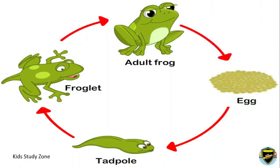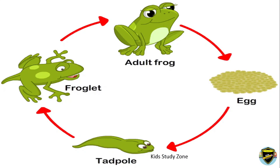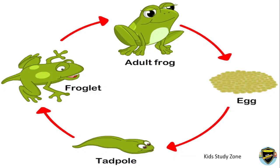Let us revise the life cycle of a frog once again. An adult frog lays eggs. The egg changes into a tadpole. The tadpole grows into a froglet, and finally it becomes an adult frog. The adult frog again lays eggs, and this process continues.